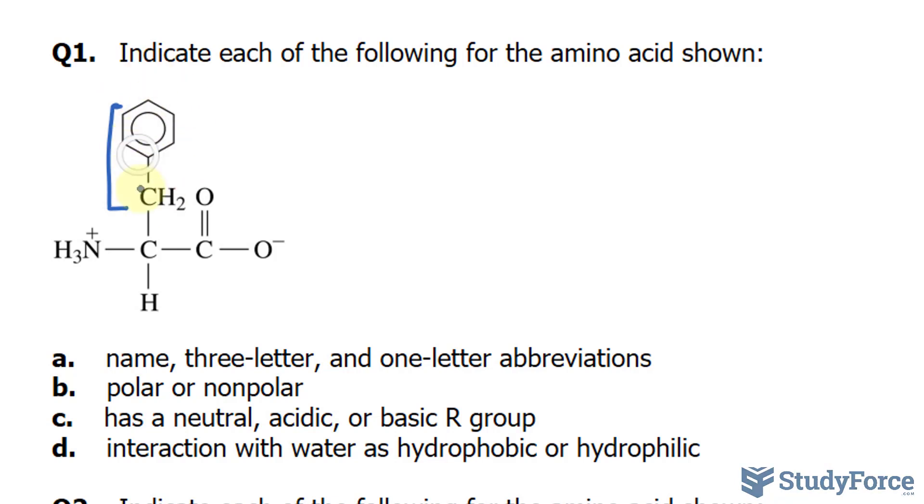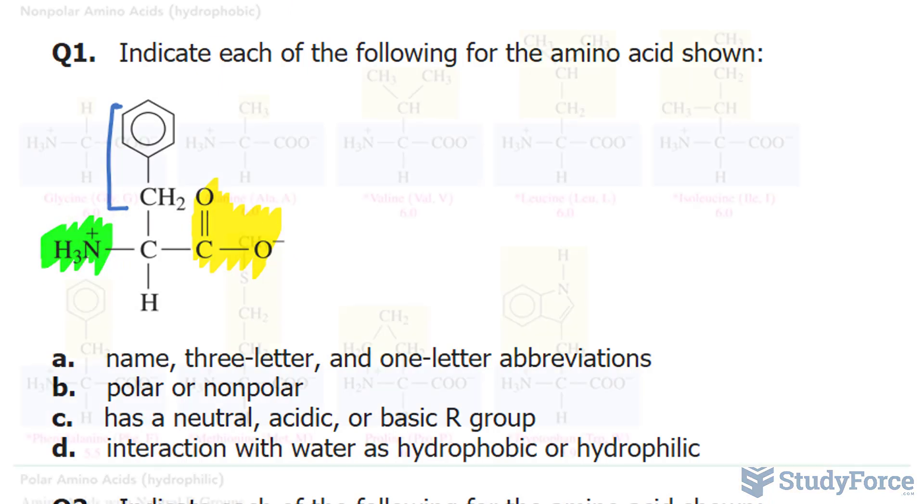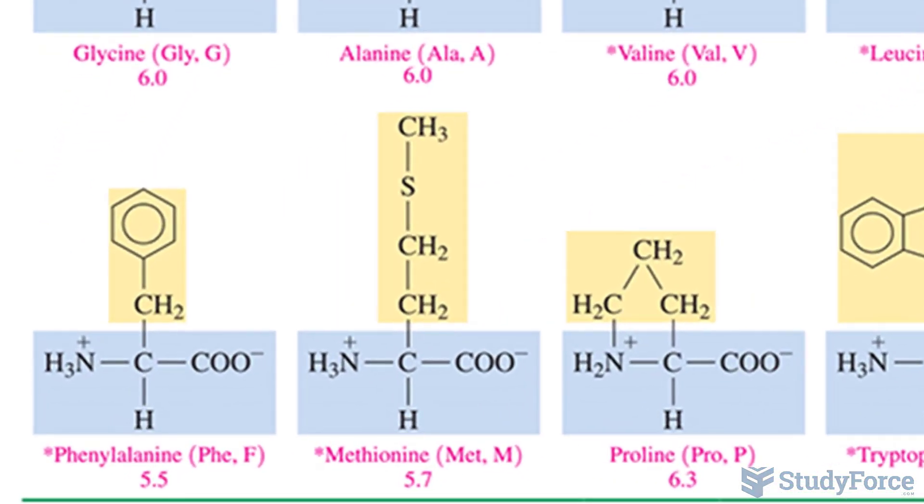It has a benzene ring bonded to a methyl group. It's also easy to identify the carboxylate part and the ammonium part right here. So let's take a look at our chart. As you can see, it stands out. This is easily identifiable as phenylalanine.